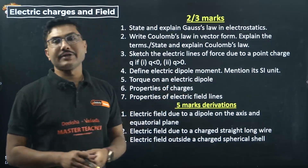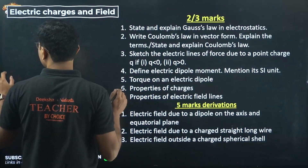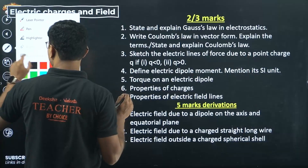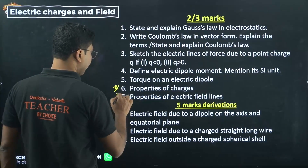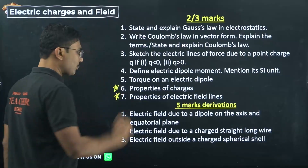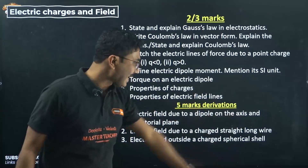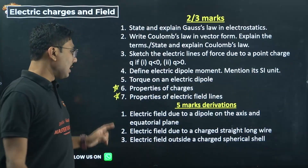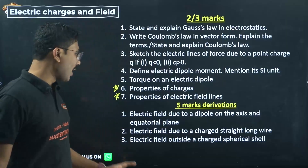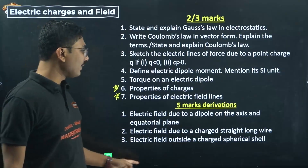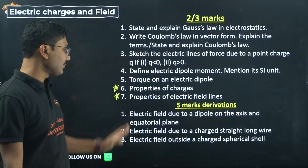Properties of electric charges and properties of electric field lines — these two are the most important questions and almost every year one of them definitely comes. Electric field due to a dipole on the axis and equatorial plane, electric field due to a long straight charged wire, and electric field outside a charged spherical shell — these are three derivations that might come from this chapter.